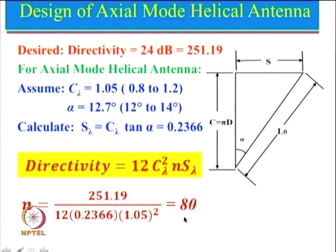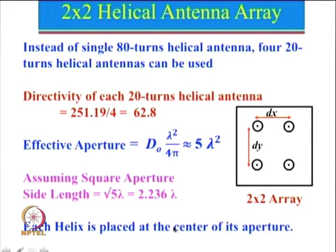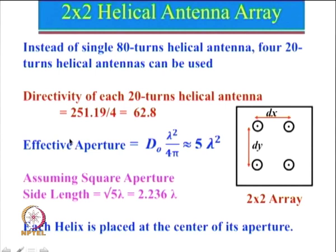Instead of using n equal to 80, the other option is that we can use an array of helical antennas. Here is an example of a 2 by 2 array—total 4 elements. So instead of using one single 80-turn helical antenna, four 20-turn helical antennas can be used. We know that directivity is directly proportional to n, so if the number of turns are reduced, directivity will also reduce by the same factor, coming down to 62.8.